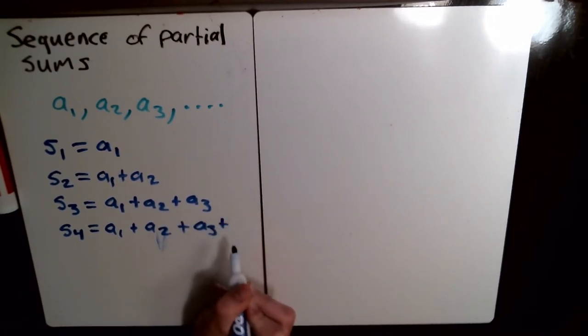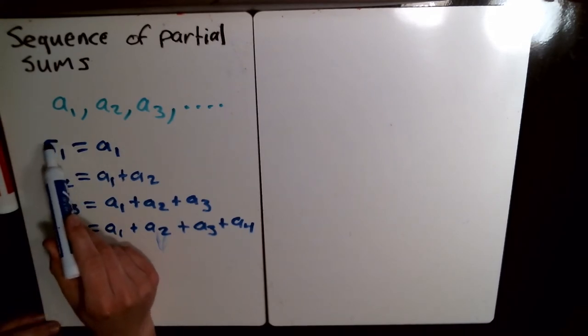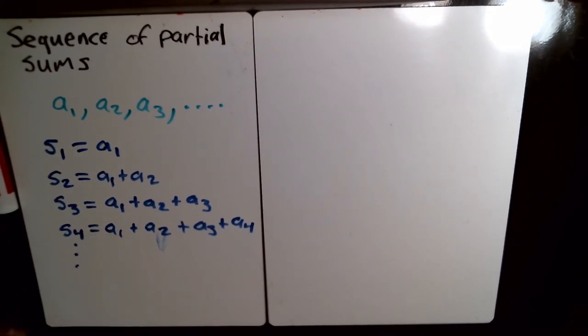So, for any sequence that you have, you can make the sequence of partial sums just doing this. And this is normally the notation they use, is s for the sequence of partial sums.